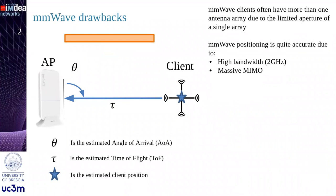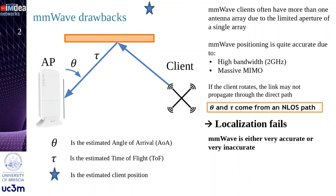mmWave provides very accurate localization. However, if the mmWave link propagates through a non-line-of-sight path due to a rotation of the client, localization fails. Therefore, mmWave is either very accurate or very inaccurate.